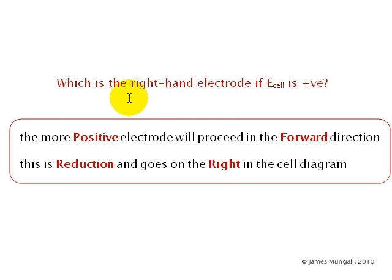So answering the question which is the right-hand electrode if E cell is positive, as I said we're going to have two electrodes, two standard electrode potentials, so one will be relatively positive to the other. I'm going to apply this rule which I've used throughout these tutorials on electrochemical series and electrochemical cells, and I say that the more positive electrode will proceed in the forward direction. This is reduction and goes on the right.